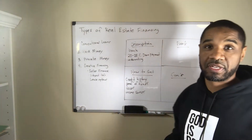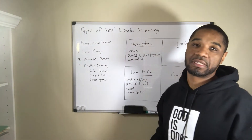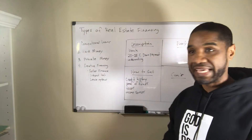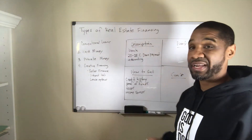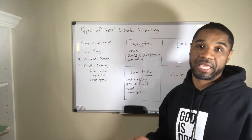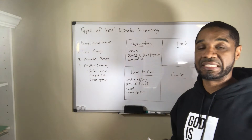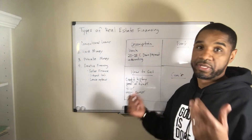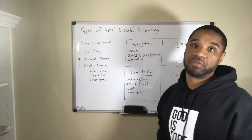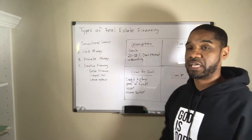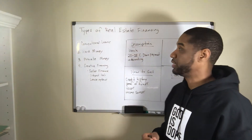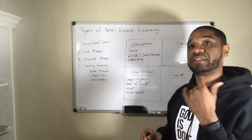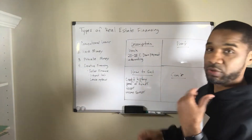Bank rates are currently at some of their lowest in several decades. You can get a mortgage loan in your name for around three to five percent. On the commercial side with more properties you can be anywhere from five to seven, even upwards of eight percent. So conventional financing is through a bank with a 20 to 25 percent down payment.